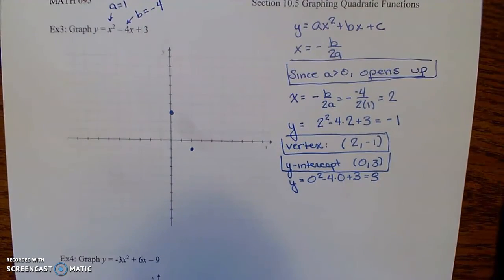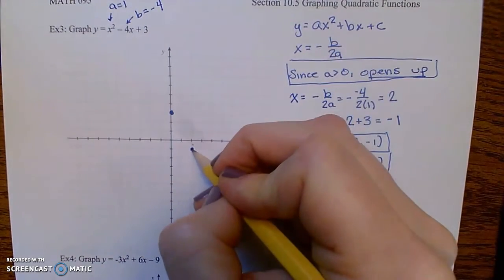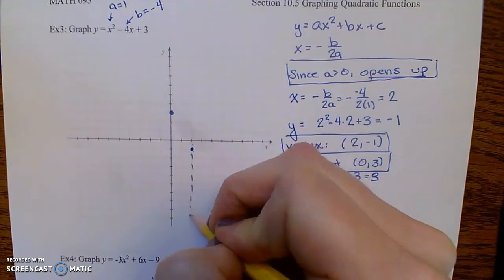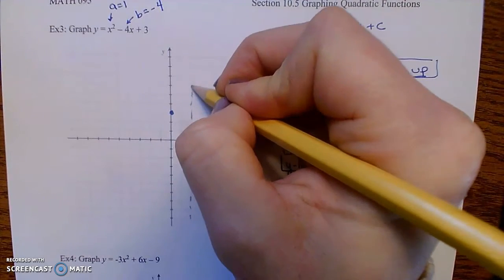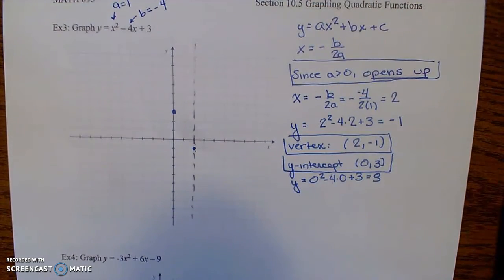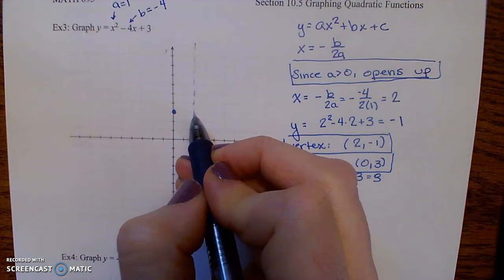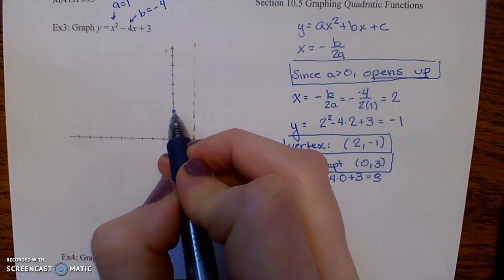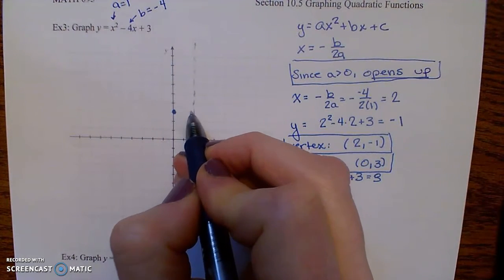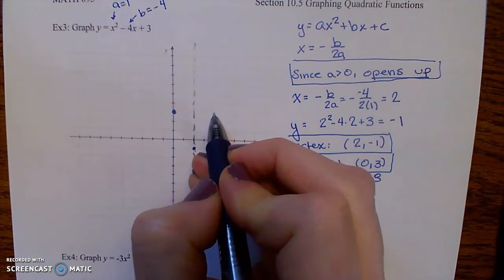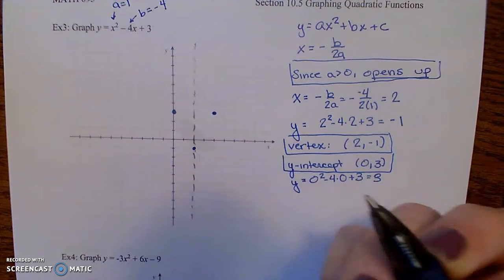Also, I can use the fact that, remember, here's the vertex. If you were to draw in the vertical line through the vertex, that's going to be an axis of symmetry for you. So because from the axis of symmetry, you go 2 units to the left here to get this y-intercept, you can go 2 units to the right. So that's going to be another point on my graph.